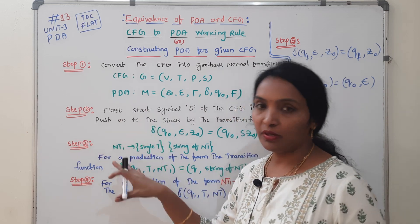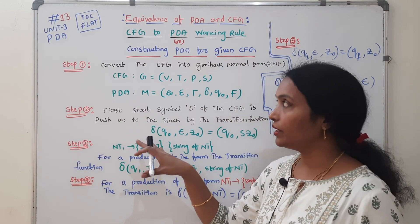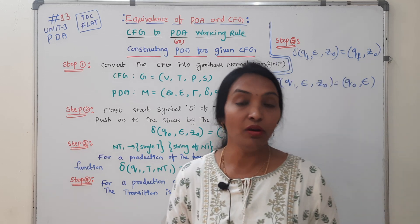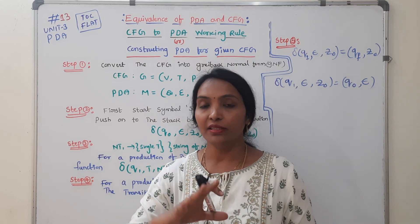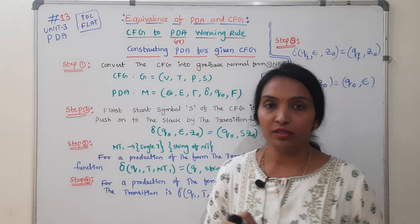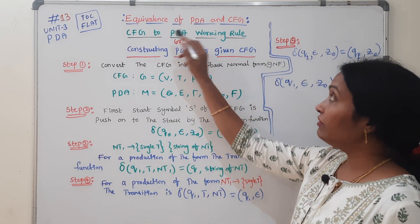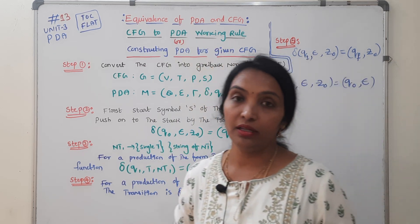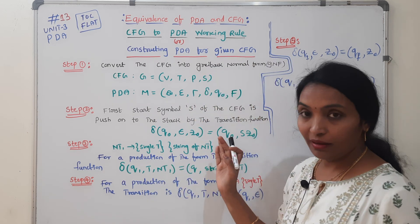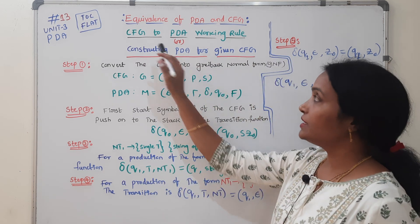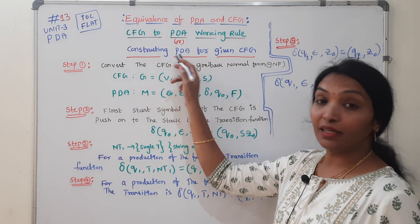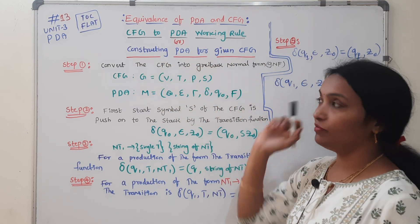In this video, I will tell you the examples. The first and very important topic is CFG to PDA. This is the working rule. The equivalence of PDA and the given CFG is the same — CFG to PDA conversion. We will construct the PDA for the given CFG.